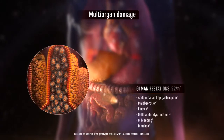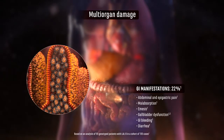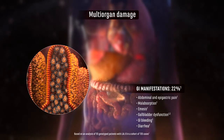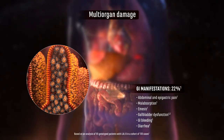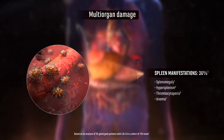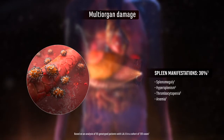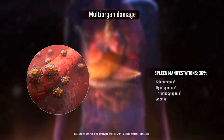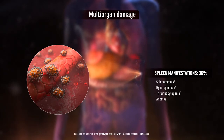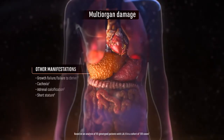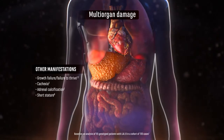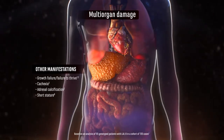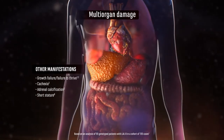22% exhibited gastrointestinal manifestations, including lipid accumulation in the intestinal villi leading to malabsorption, and 36% exhibited spleen manifestations, including splenomegaly, leading to anemia and thrombocytopenia. Other manifestations can include growth failure, failure to thrive, cachexia, adrenal calcification, and short stature.